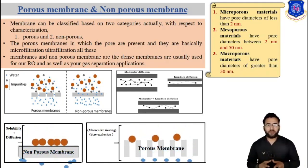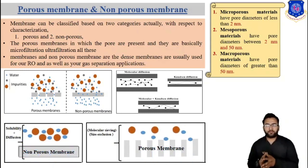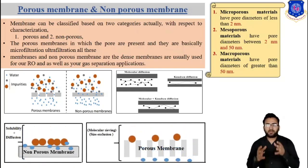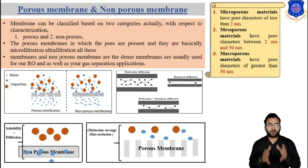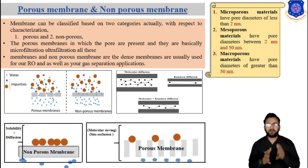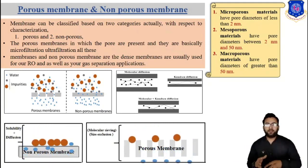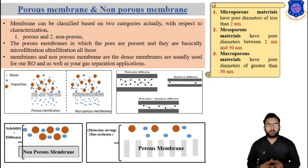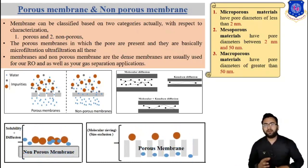Non-porous membranes, also called dense membranes, do not have any distinct pores. Their working mechanism is solution-diffusion, involving two key factors: solubility and diffusivity. Initially, solutes that are supposed to permeate through the membrane come and sit on the surface, then solubilize inside the membrane matrix. Once solubilized, they diffuse across the membrane to the permeate side. Only solubility and diffusivity play an important role here.